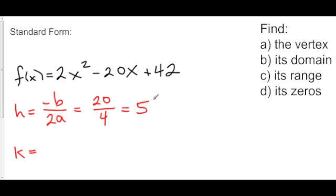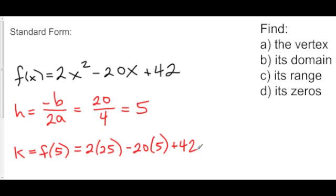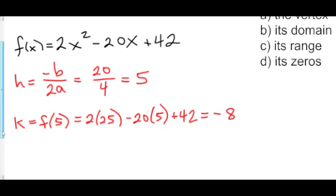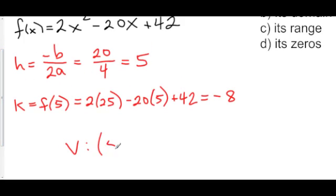Then to find the y-value of the vertex, we just plug this x-value back in to x. So k is equal to f of 5, which is 2 times 25 minus 20 times 5 plus 42. 2 times 25 is 50 minus 100 is negative 50 plus 42 is negative 8. So my vertex is at the point 5, negative 8.